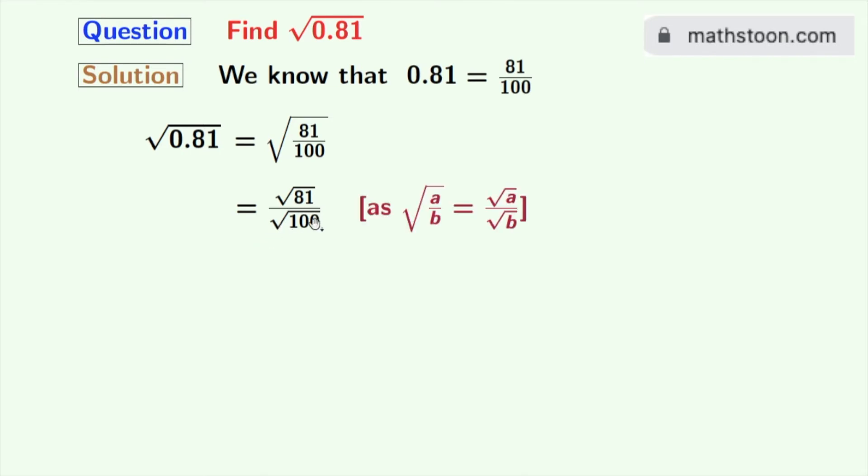Using the rule of square root of a by b is equal to square root of a by square root of b, here a is 81 and b is 100. We all know that square root of 81 is equal to 9.